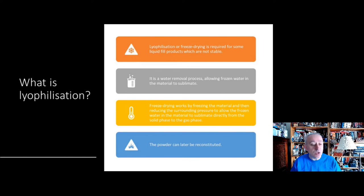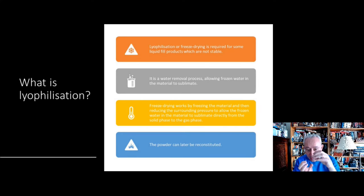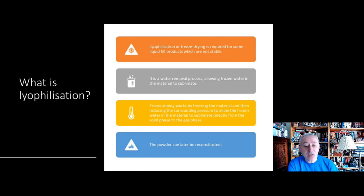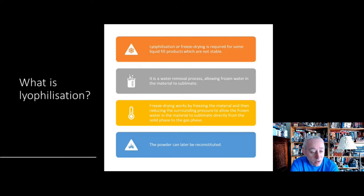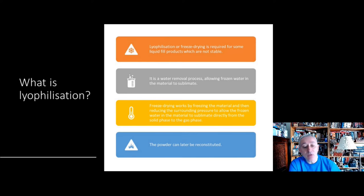Freeze drying works by freezing the material, then reducing the surrounding pressure to allow the frozen water in our product to sublimate directly from the solid phase to the gas phase without going through becoming a liquid. Adding heat allows the frozen water in the material to go through this process.